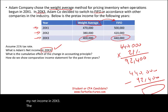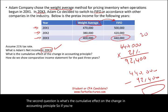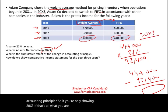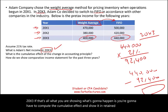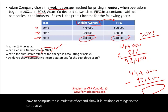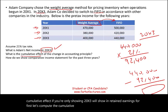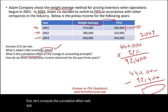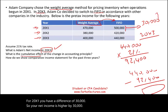The second question is: what's the cumulative effect of the change in accounting principle? If you're only showing 20x3, you have to compute the cumulative effect and show it in beginning retained earnings — it doesn't affect the income statement for this question. For 20x1, there's a difference of 30,000, meaning net income would have been higher by 30,000. In 20x2, there's a difference of 40,000.